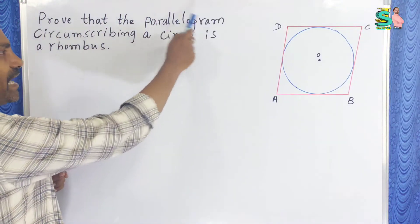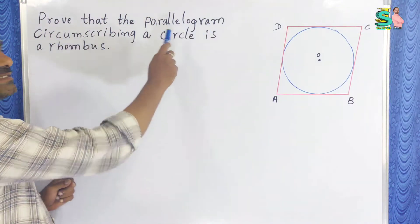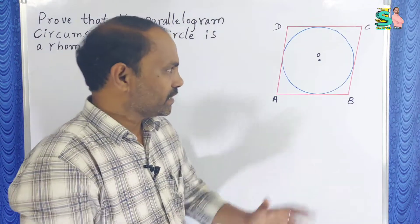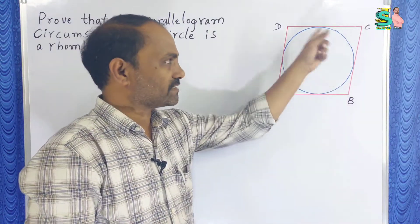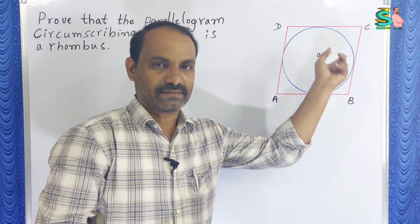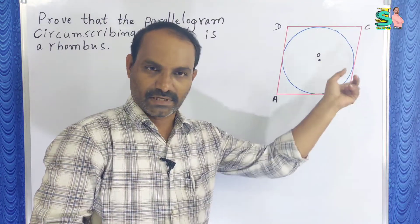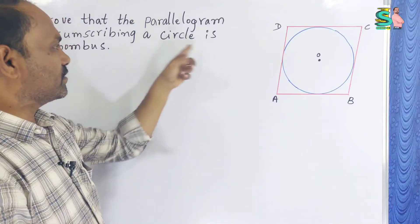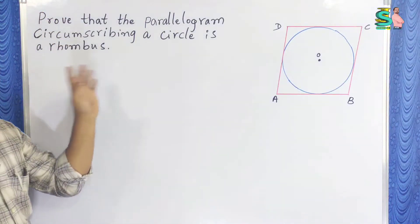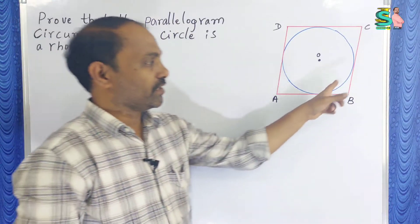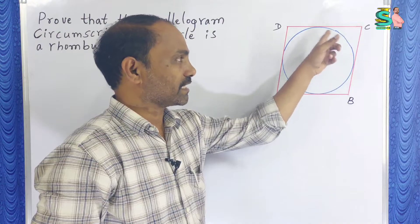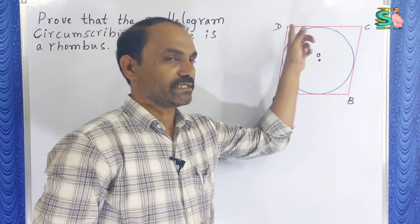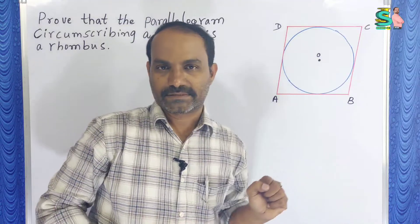Prove that the parallelogram circumscribing a circle — circumscribing a circle means if a circle touches four sides of a parallelogram inside, then it is a rhombus. So if a circle touches all four sides of the parallelogram, then this ABCD parallelogram is a rhombus.